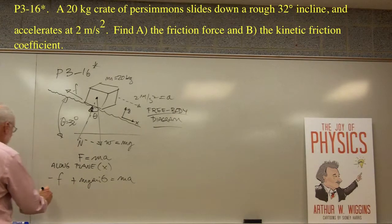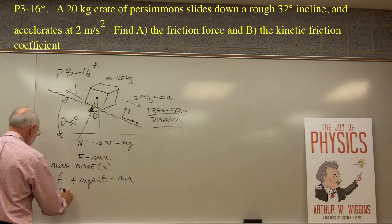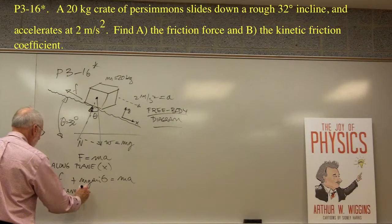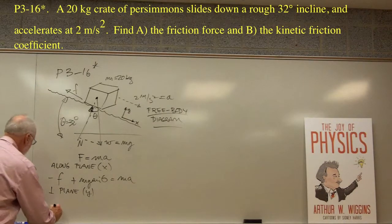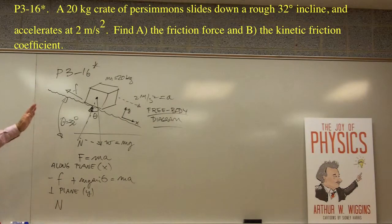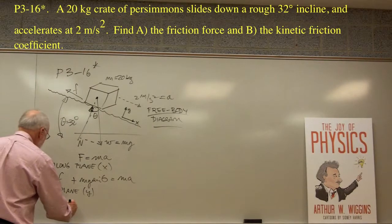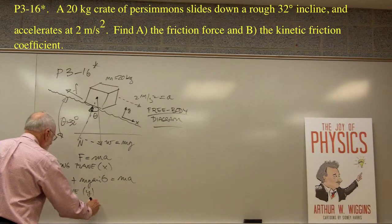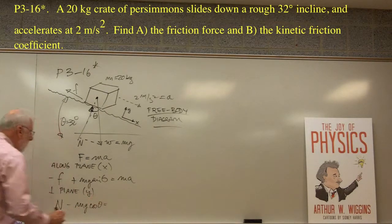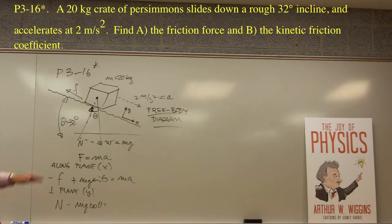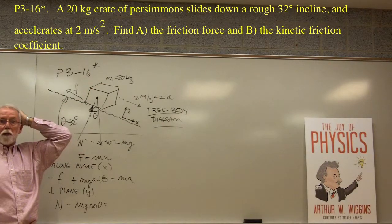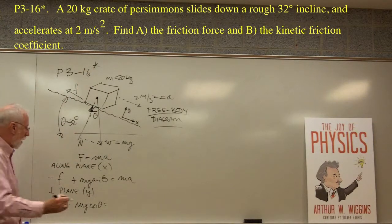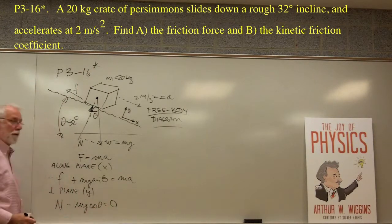Now for the y direction, perpendicular to the plane: we have N pointing in the positive y direction, and the component of weight perpendicular to the plane, which is mg cosine theta. This equals ma in the y direction — but there's no acceleration perpendicular to the plane (it's not jumping off or falling through), so that equals zero.